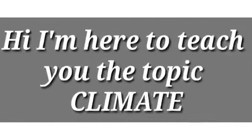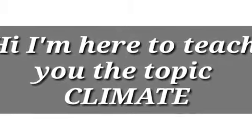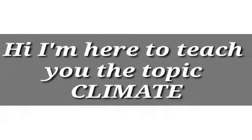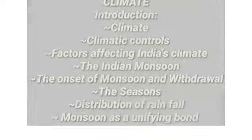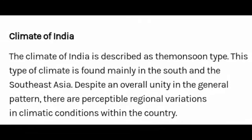This video covers the chapter on climate, including climatic controls, factors affecting India's climate, the monsoon, the Indian monsoon, onset and withdrawal of monsoon, seasons, distribution of rainfall, and monsoon as a unifying bond. The climate of India is described as the monsoon type, which is found mainly in South and Southeast Asia. Despite an overall unity in the general pattern, there are perceptible regional variations in climatic conditions within the country.